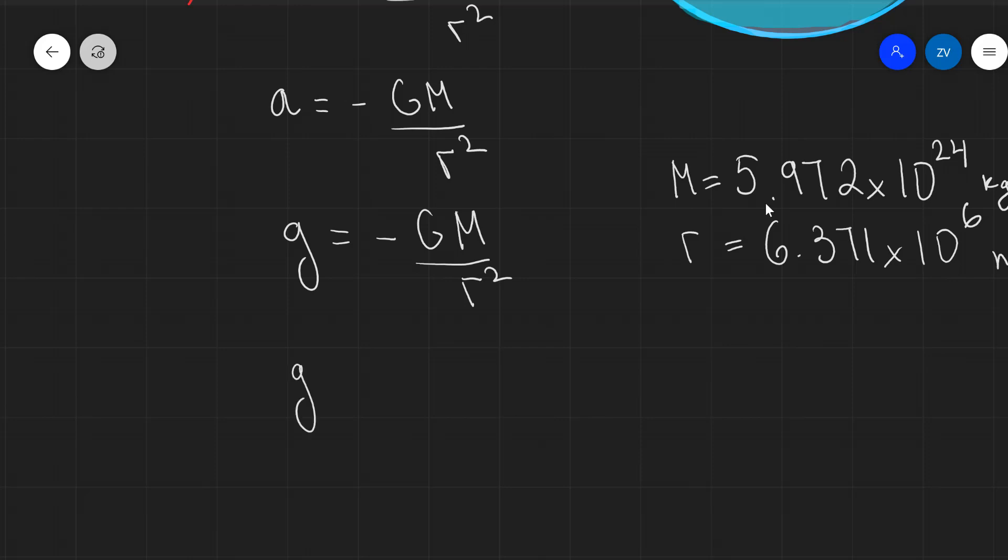The gravitational acceleration, g, will be minus the constant, which is 6.67 times 10 to the power of minus 11, multiplied by the mass of the Earth, which is about 5.972 multiplied by 10 to the power of 24 kilograms. Then we're going to divide this by the radius of the Earth squared. So that's going to be bracket 6.371 times 10 to the power of 6 squared.